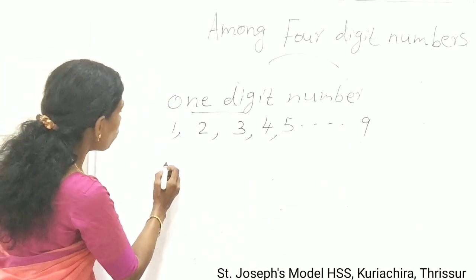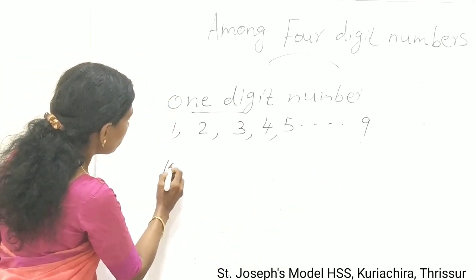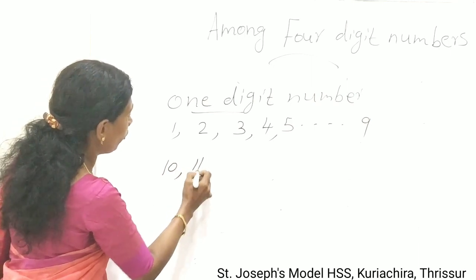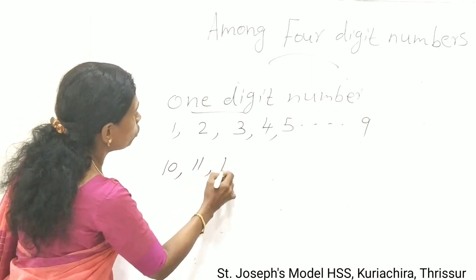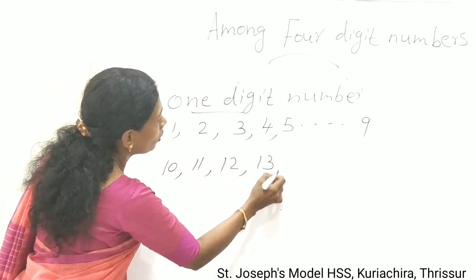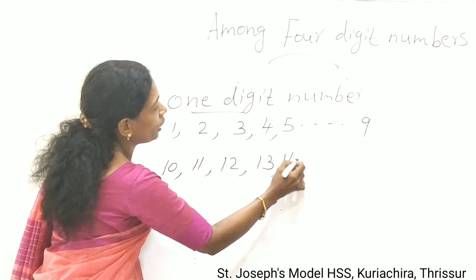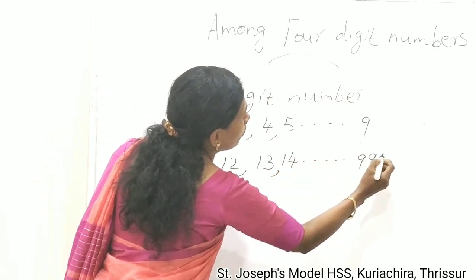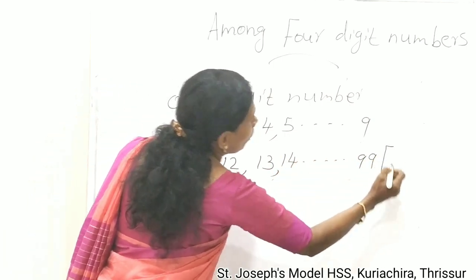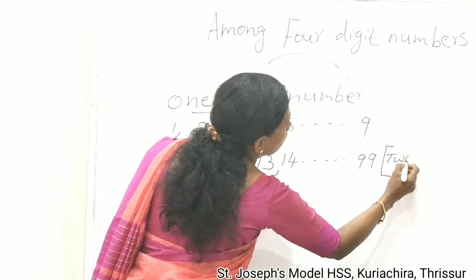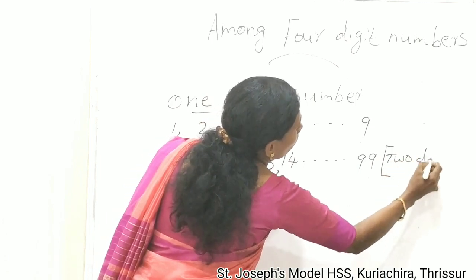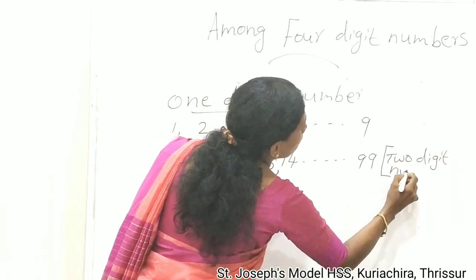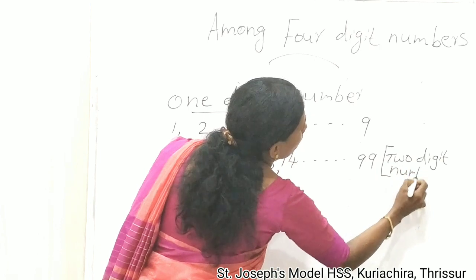9 is the largest 1 digit number. In the same way, our 2 digit numbers start from 10, 11, 12, 13, 14, up to 99. These are all 2 digit numbers.